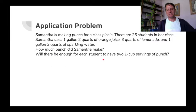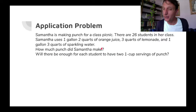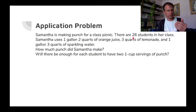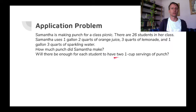Samantha, that punch-making demon, is at it again. She's making punch for a class picnic — there are 26 students in her class. Samantha uses one gallon two quarts of orange juice, three quarts of lemonade, and one gallon three quarts of sparkling water. How much punch did Samantha make? We want a total, and there's a second question: will there be enough for each student to have two one-cup servings? 26 students times two cups each — 26 times 2 is 52. We're going to need 52 cups in the end.